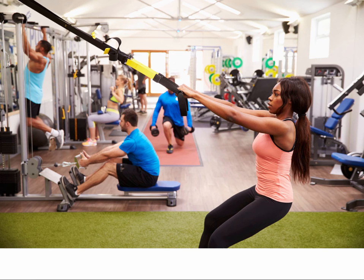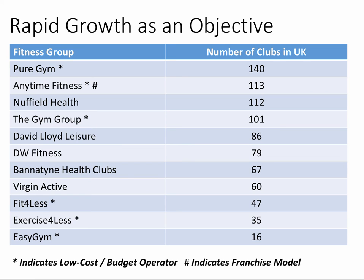I want to spend a couple of minutes looking at an actual example of a market where objectives differ. The gym market in the UK has become really interesting — it's a contestable market and there have been lots of mergers and takeovers in the last year or two. Going back 5, 10, 15 years, this market was pretty static — lots of cosy middle-income, middle-class gyms. The market has been shaken up by the emergence of low-cost budget operators: Easy Gym was in pretty early, exercise for less, fit for less. Pure Gym is the biggest. Some use a franchise model, like Anytime Fitness. There are now a much bigger number of gyms in the UK, many located in big towns and cities.